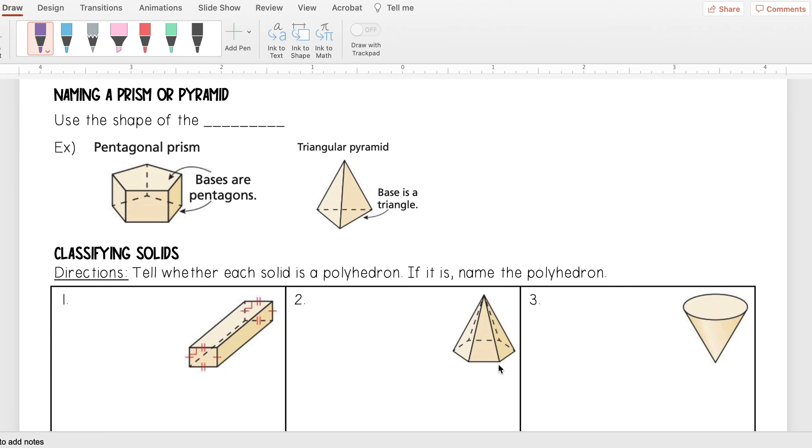And so we can go about naming a prism or pyramid, and the way that we do that is we're going to use the shape of the base. So again, the base is going to be those polygons that are congruent and parallel from each other.